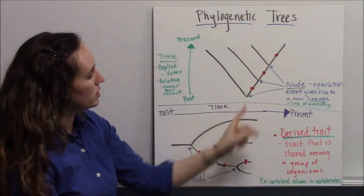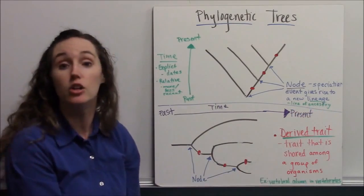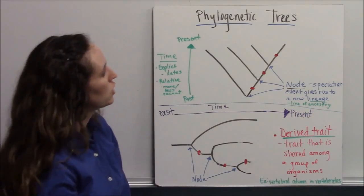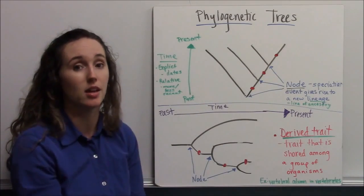Each of these points is called a node. That's when you're going to get a new line of ancestry, a new lineage, because a new trait has been derived. That's what these little red dots are. A derived trait is a trait that's shared among a group of organisms.